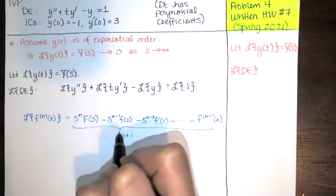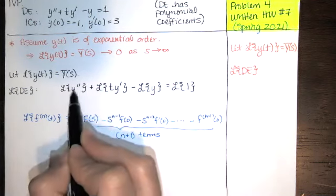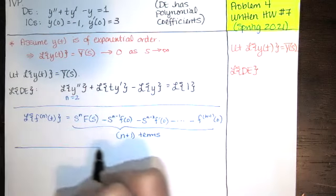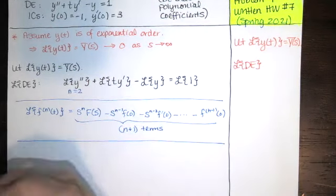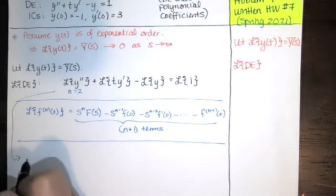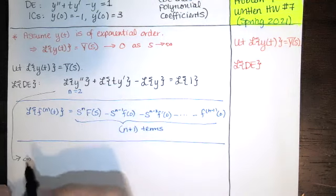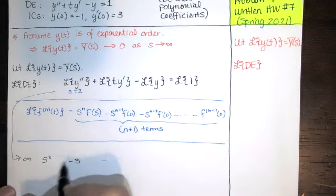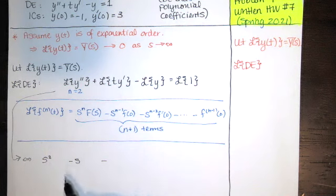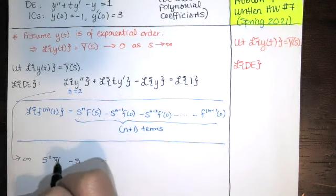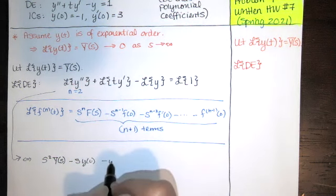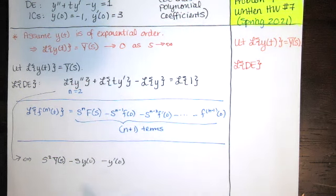We always have n plus one terms. For the second derivative, n equals two, giving us three terms. So the Laplace transform of Y double prime starts with S squared times Y(S), then we subtract S times y(0) and subtract y'(0). Substituting our initial conditions, those are just numbers — that gives us the Laplace transform of Y double prime.